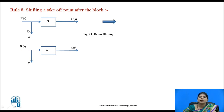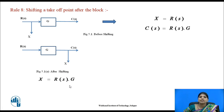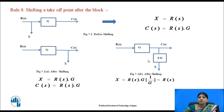Rule eight: shifting a takeoff point after the block. Before shifting, X = R(s) and C(s) = R(s)·G. After shifting the takeoff point after the block, both X and C(s) become R(s)·G. To restore the original X = R(s), the input X is multiplied by the reciprocal of the transfer function, 1/G, in series with all other signals. This gives X = R(s) and C(s) = R(s)·G, matching the original outputs.